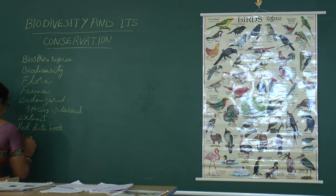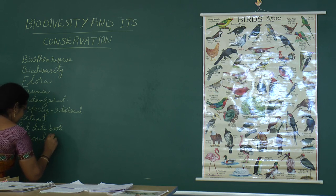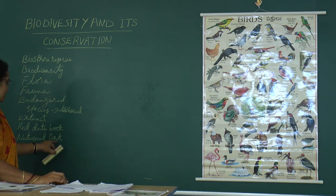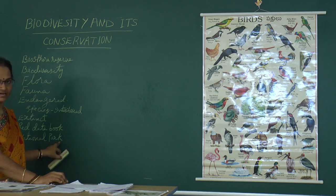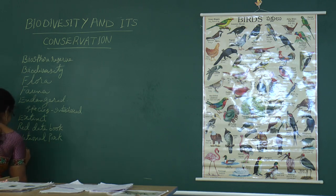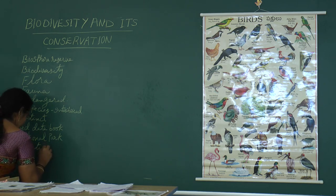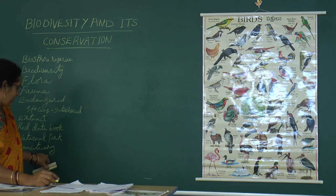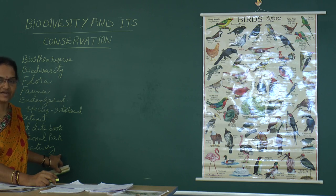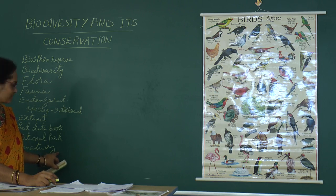Next: national park. National park is the place where a large area is used to conserve animals in their natural habitat — the place where wild organisms are protected in their natural habitat. Next keyword: sanctuary. Sanctuary is the place where specific organisms are conserved or protected, for example birds, which are protected in a specially designed area.